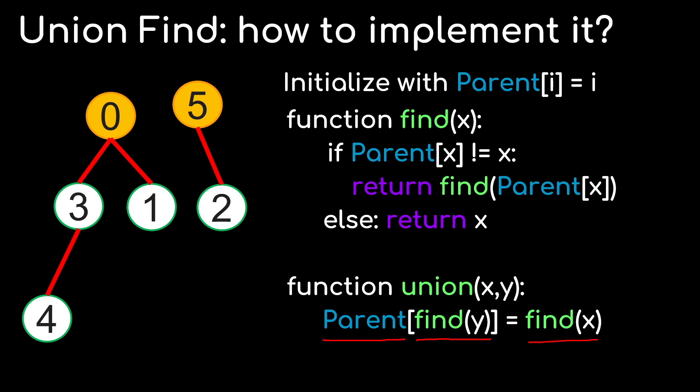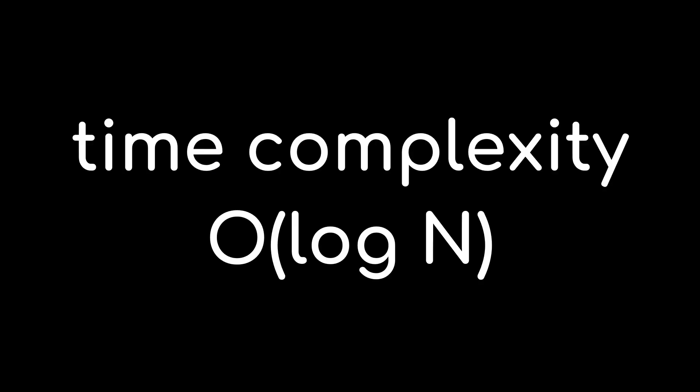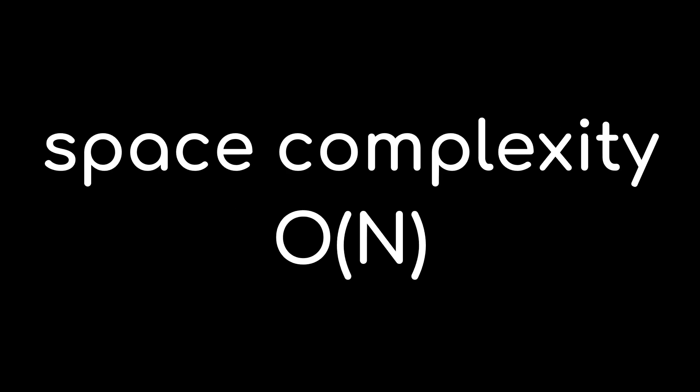So that is the algorithm, and now let's discuss the complexity of this algorithm. If the data structure contains n elements, then on average, the height of the trees will be on the order of log of n. Since both the find and union operations involve traversing up the trees at most two times, the time complexity of both functions is O of log of n. The space complexity will be O of n owing to the parent array, which will have length n.